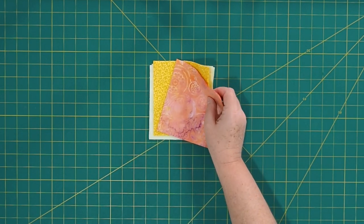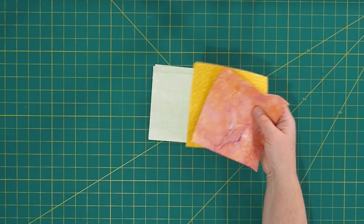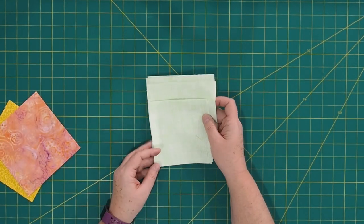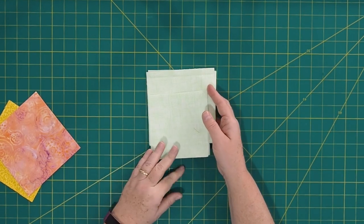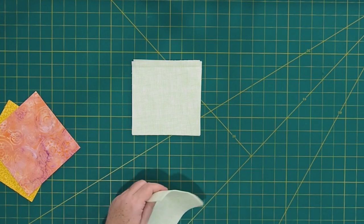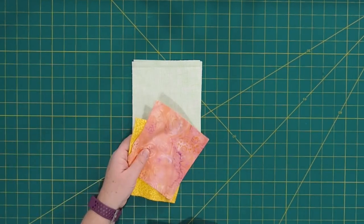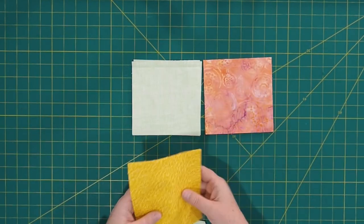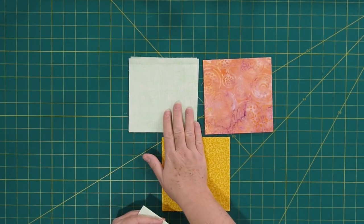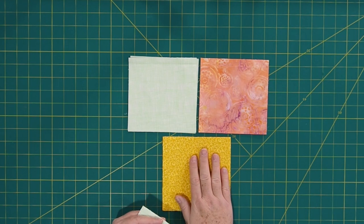Alrighty, so for the Pinwheel Sawtooth Star, we need three different fabrics and we need a fat quarter of each one. That makes it easy. So there's a background fabric, which is this sort of very pale green that I have here, and then there are two other fabrics. There's a fabric A and a fabric B. And here's the cutting that you need for all of those. It's really simple.